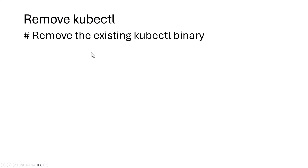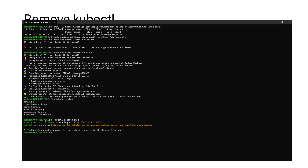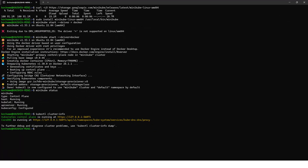The removal of KubeCTL will be done through this command: sudo rm /usr/local/bin/kubectl. Let's get back to our PowerShell and issue this command.